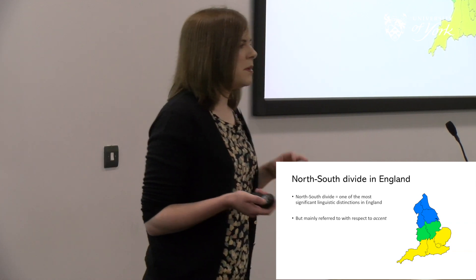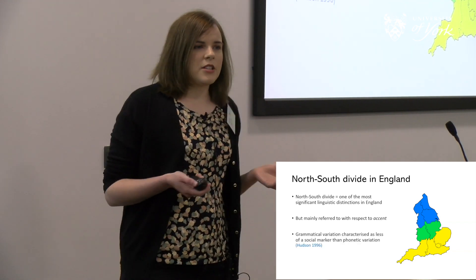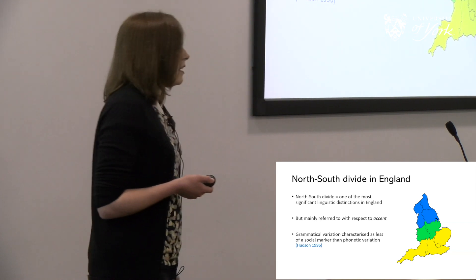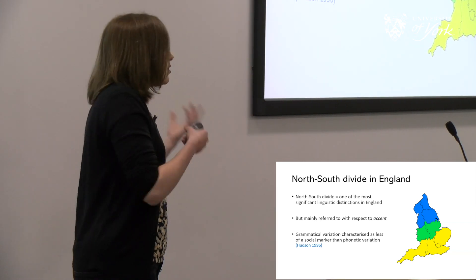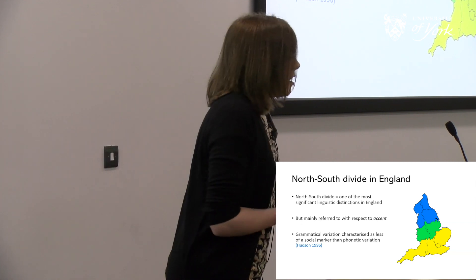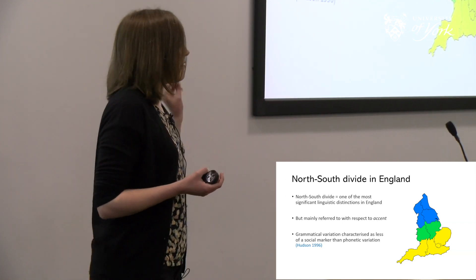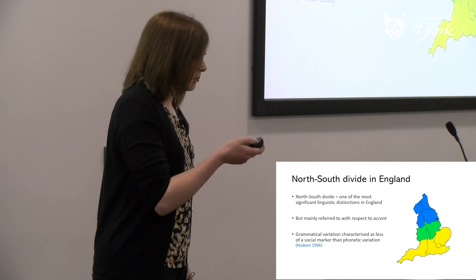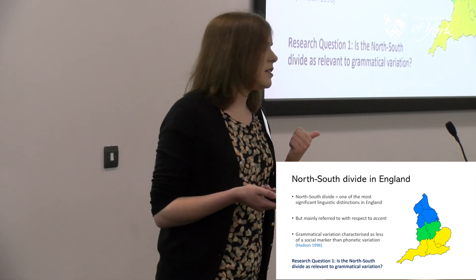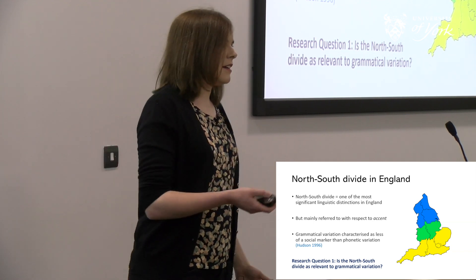Often when we talk about the north-south divide for language, it's to do with accents — pronunciation differences — rather than other aspects of language. Grammatical variation, the structures we use in different dialects, is seen as less of a social marker than phonetic variation. So the starting question is: is the north-south divide as relevant to grammatical variation? We assume it's not, but is it actually relevant empirically?